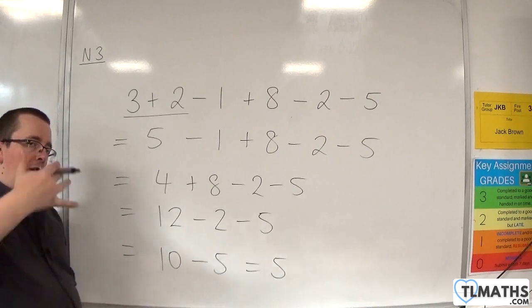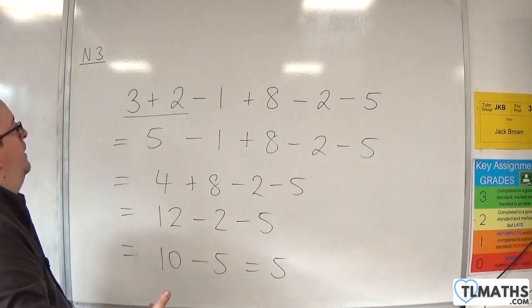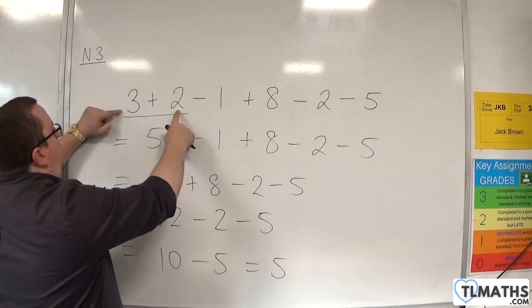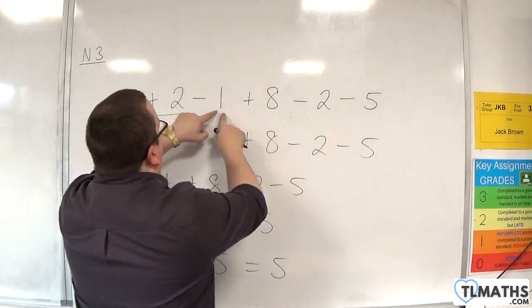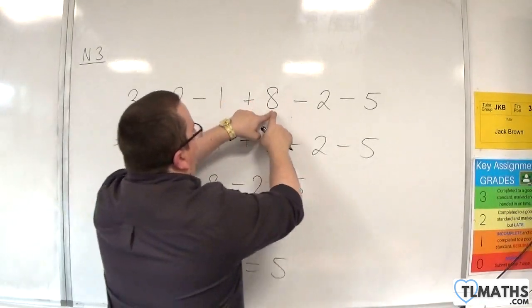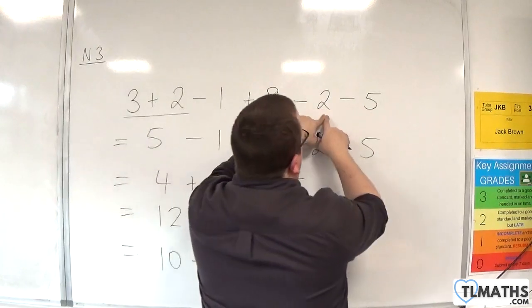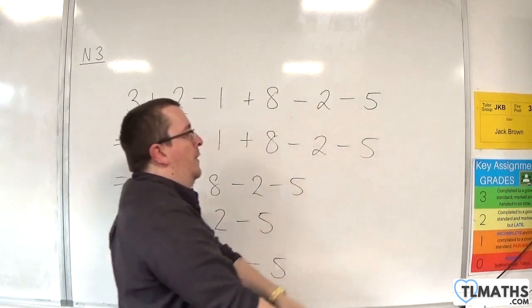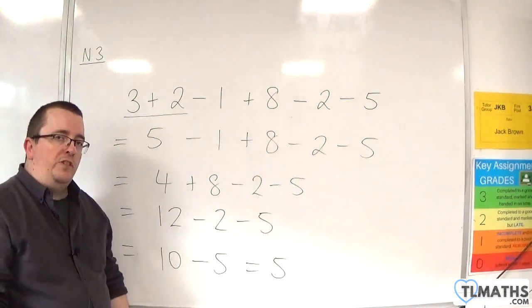Now, you don't need to write all of that out. That's really just to kind of show the progression. So we started off with 3 plus 2. That was 5. Then we took away 1, which was 4. We added 8, which was 12. We took away 2, which was 10. Then we took away 5, which was 5. That's where we get our end result.